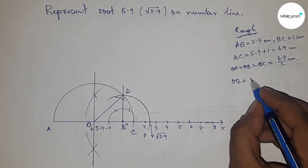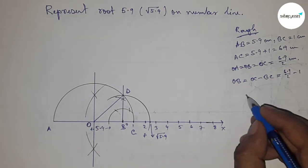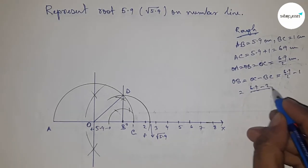OB equals OC minus BC. Putting the values of OC and BC and after calculating, this is 4.9 by 2 centimeters.